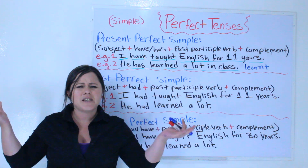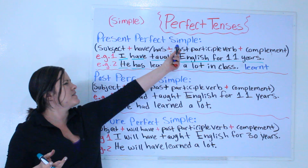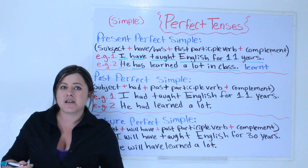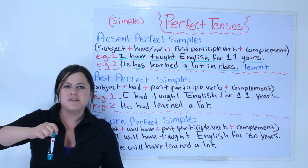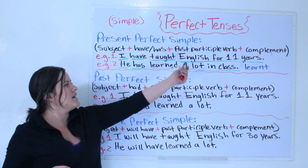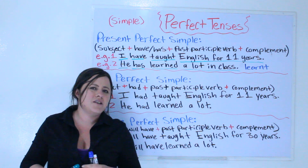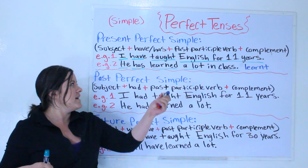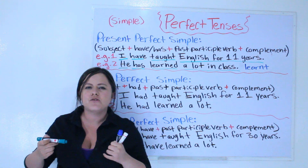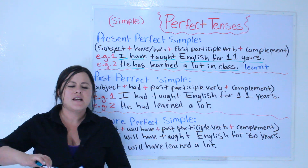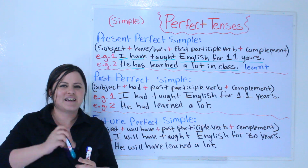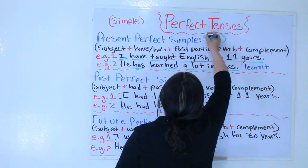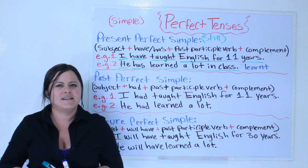When do we use the present perfect simple? We use it when we want to talk about something that we did and we still do today. 'I have taught English for 11 years' — I started teaching 11 years ago and I still teach today. So the present perfect simple describes something you started in the past and you still do today.